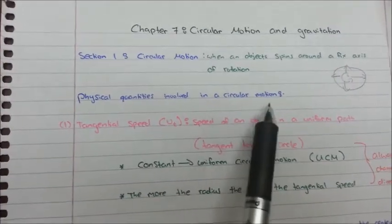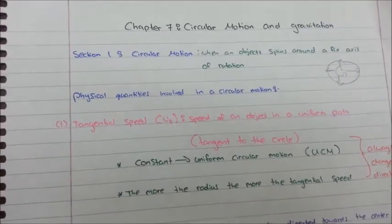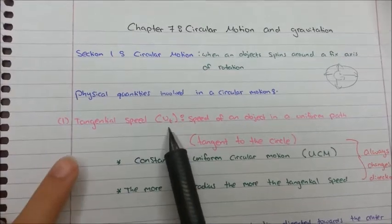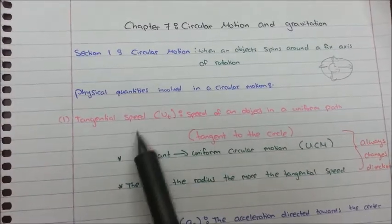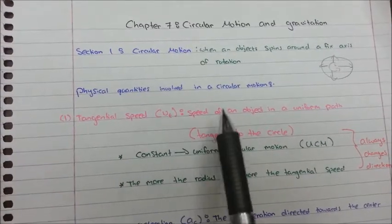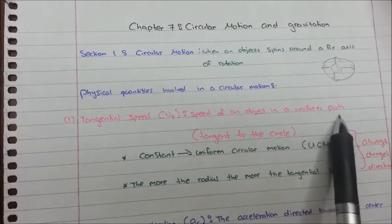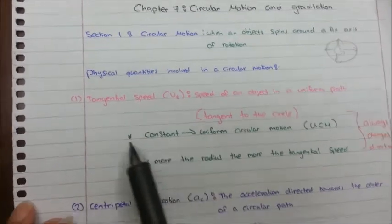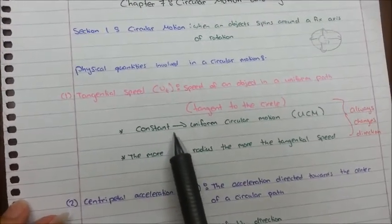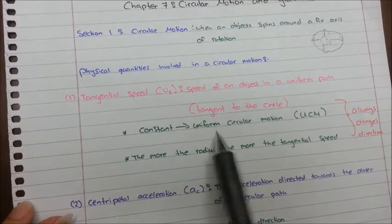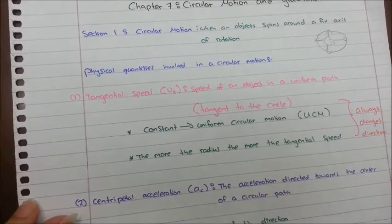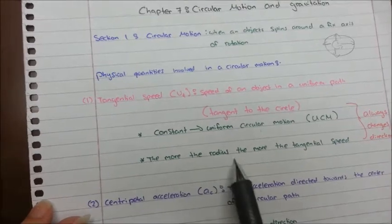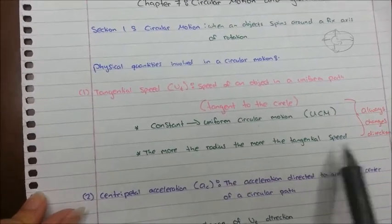The physical quantities involved in circular motion: the first physical quantity is tangential speed, which is also called Vt. Vt is the speed of an object in a uniform path which is tangent to the circle. Vt is always constant — we can call it uniform circular motion, UCM — and the more the radius, the more the tangential speed.